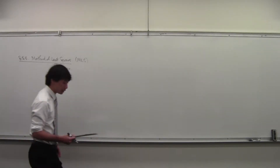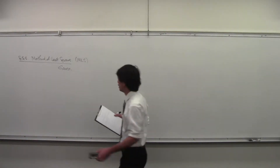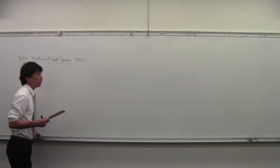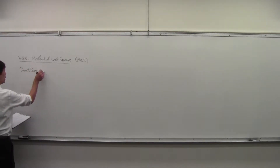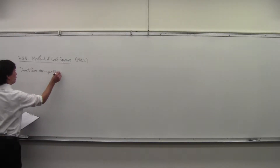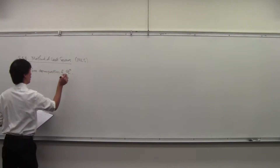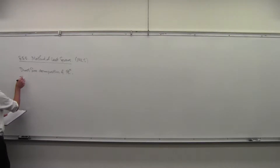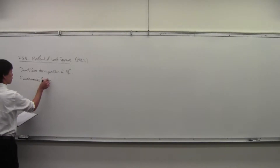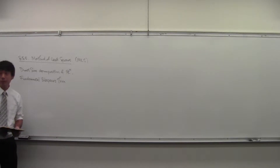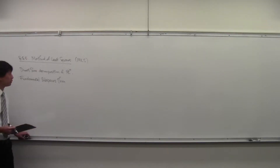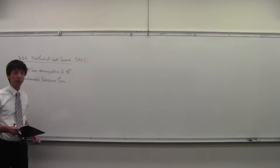This method actually relies on some things we did last time. First is the direct sum decomposition, and second — though we didn't cover it last time but some time before that — the fundamental subspaces theorem. Can anybody remind us what the direct sum decomposition is? What was the direct sum?